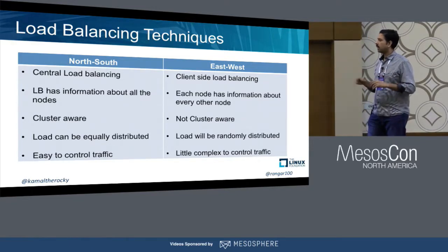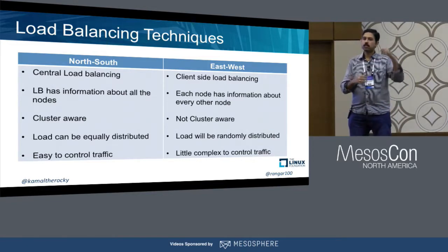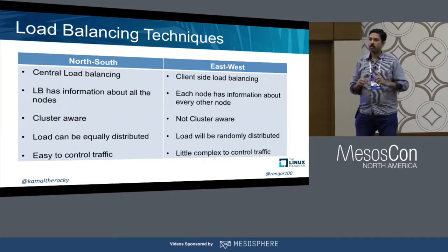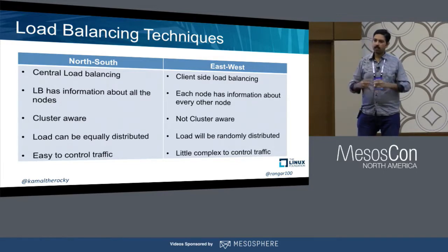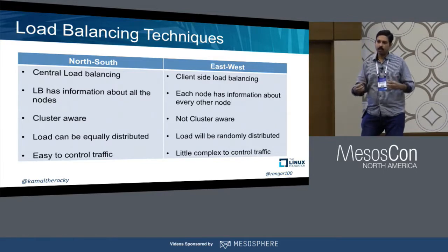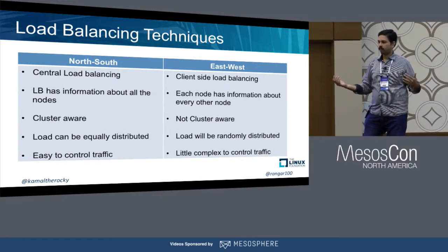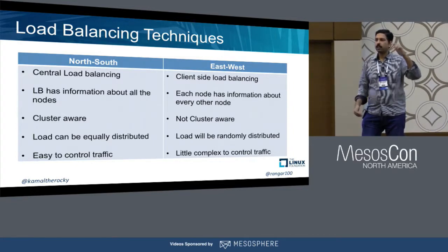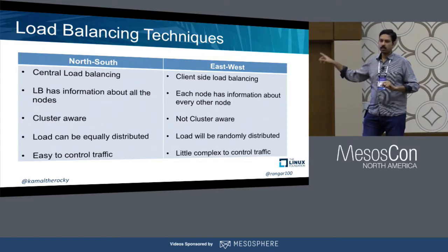In north-south, it's central load balancing — a single entry point — and you have full control. That is one of the biggest aspects: if you want to take traffic out, you can do it at a single point. In a service mesh, you need to have a proxy aware of this, and if there is a network partition and the proxy doesn't get that update, you will still be sending traffic to it. From an enterprise level, a key decision was made to go with north-south because we want a single entry point where we can control traffic. If something is wrong and we don't want any VM to get traffic, we need a simple knob to say don't send traffic — that was possible only with north-south.